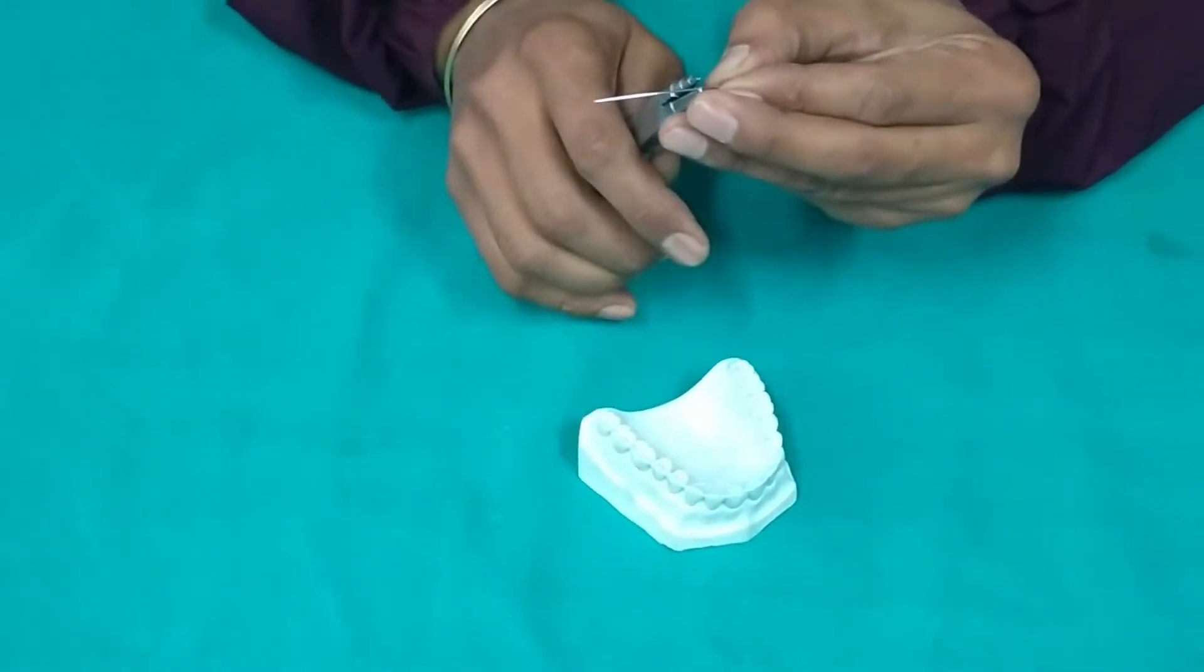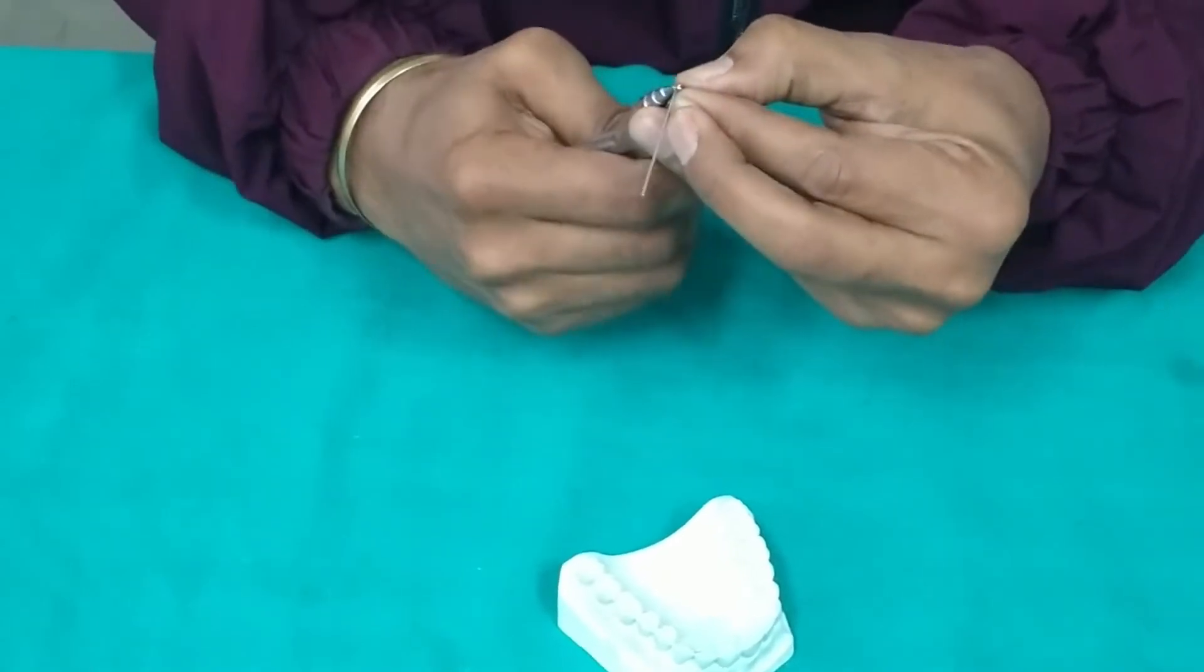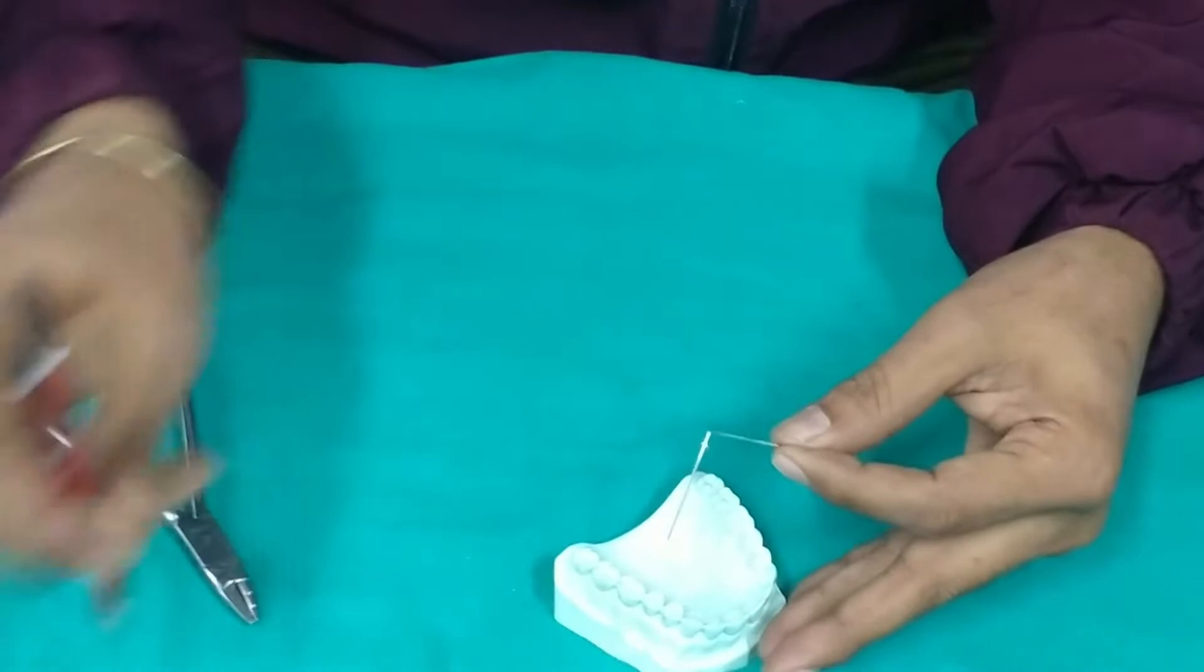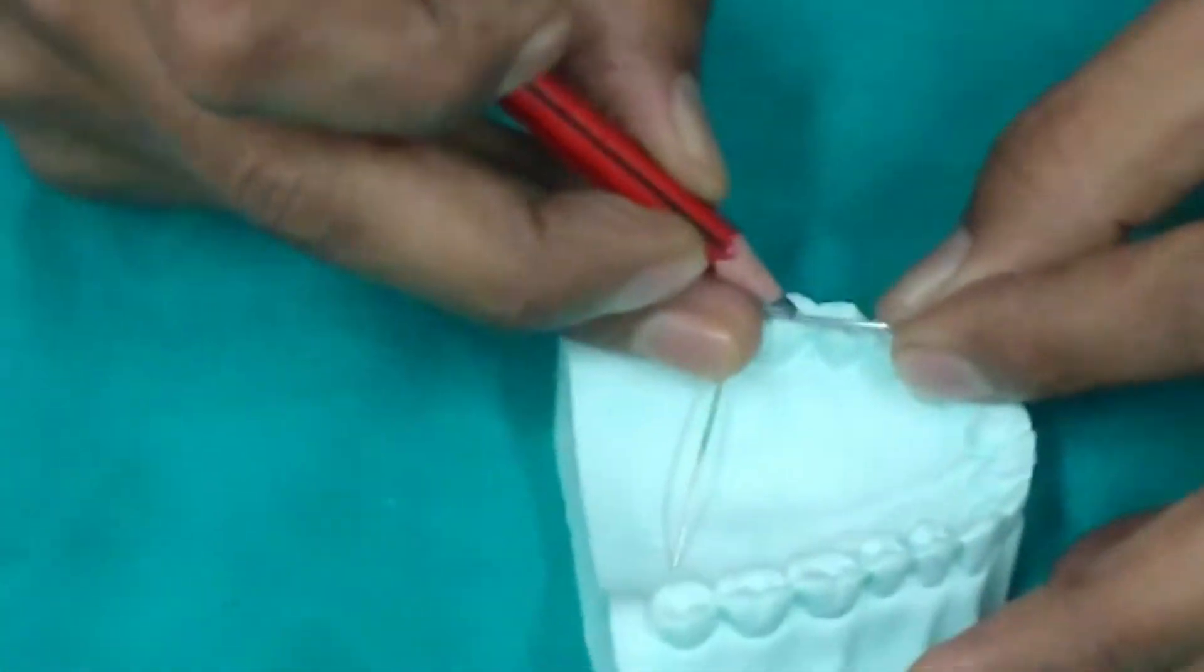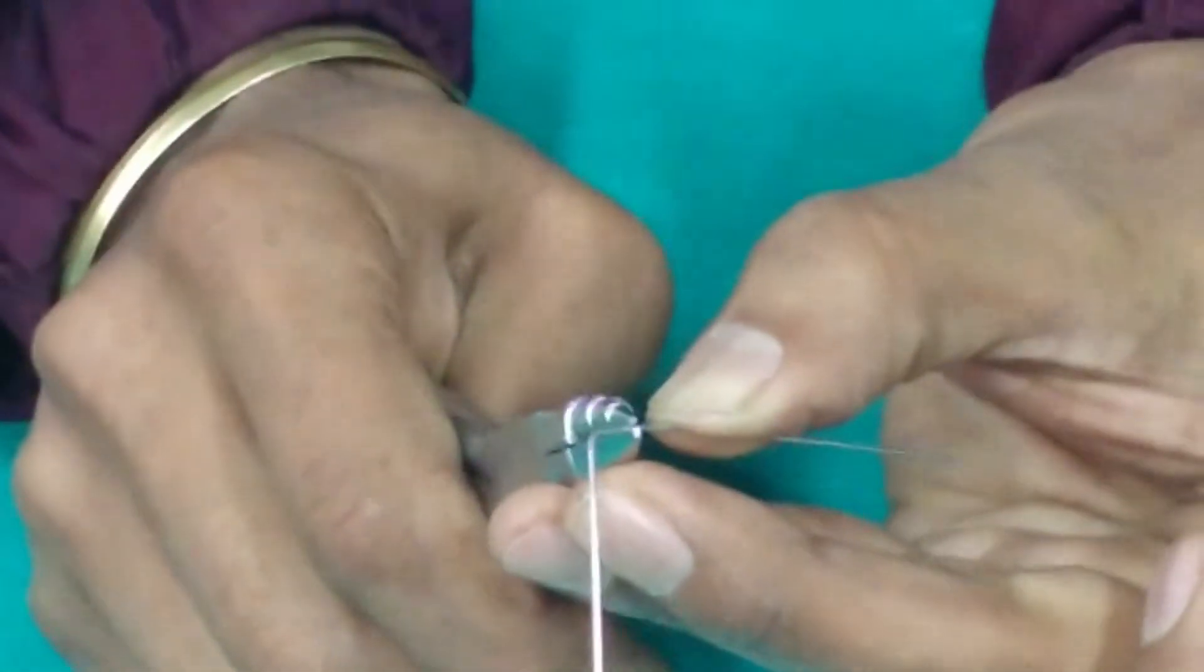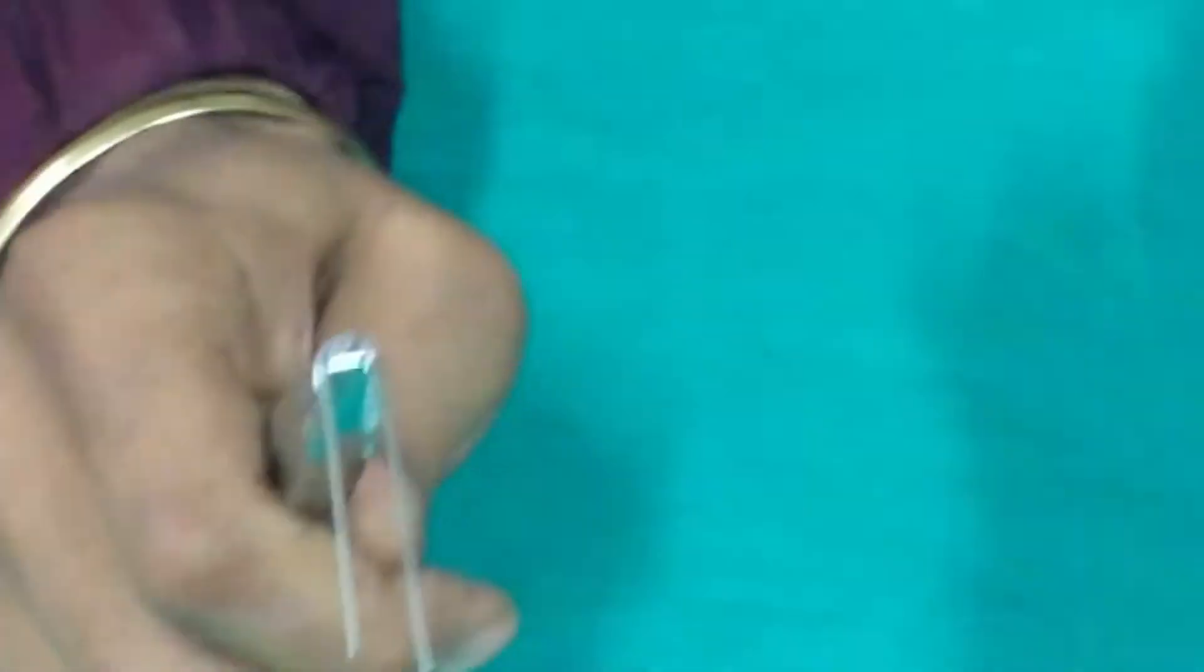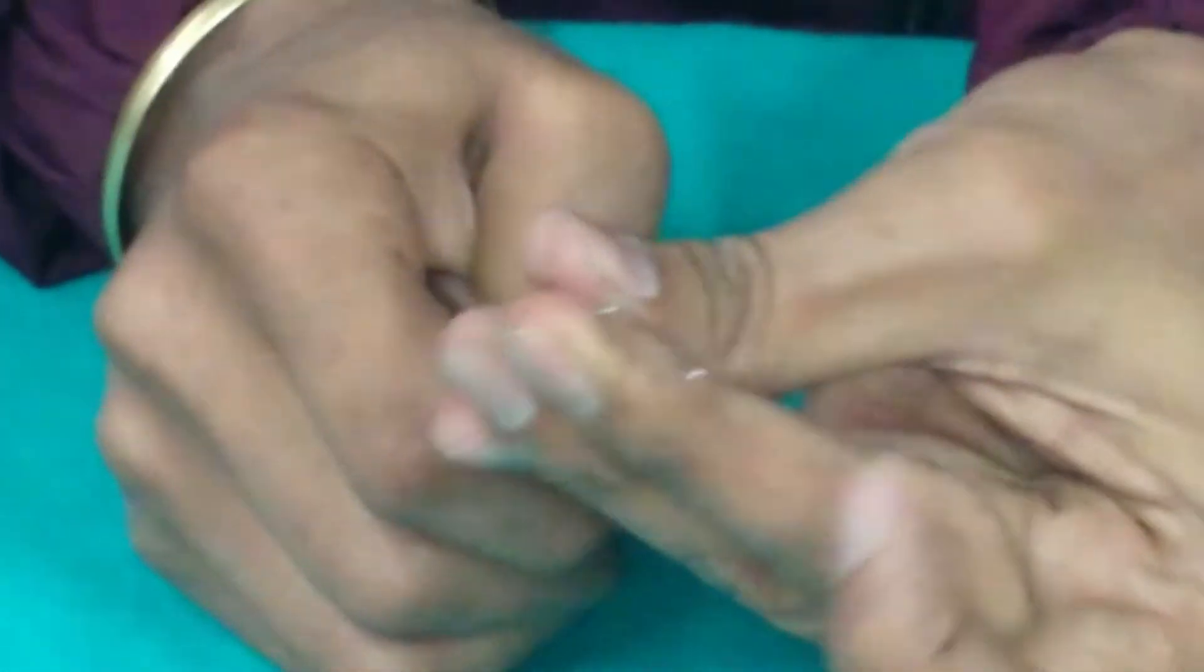In first step, we will hold the wire and give an acute bend. Now, we will mark the length of the retention bridge equal to two-thirds of the mesial-distal width of the tooth. The length of the connecting bridge should be two-thirds of the mesial-distal width of the tooth.